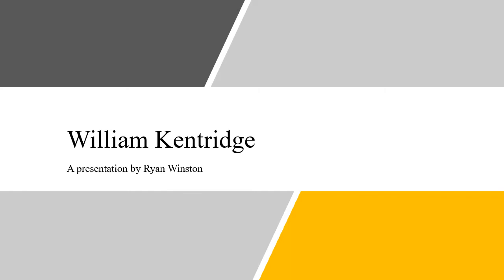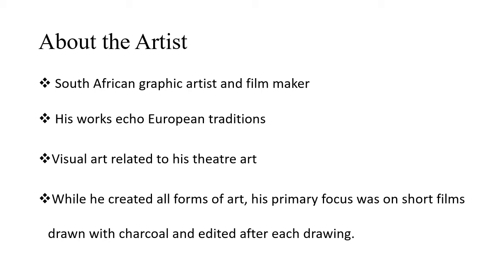Good afternoon. This is a presentation by Ryan Winston about William Kentridge. Kentridge was born April 28, 1955 in Johannesburg. Many of his works honored the traditions of European artists such as Francisco de Goya and William Hogarth. The visual arts he created related to his theater arts because he saw a strong connection between the two, and throughout his life this was a common theme.